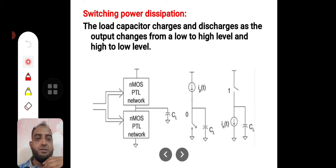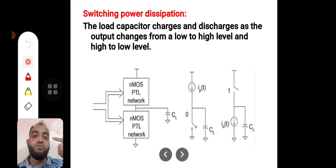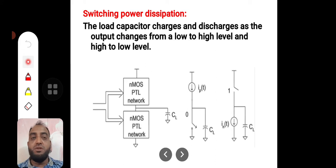Switching involves charging and discharging the load capacitance. Charging the load capacitance makes the logic level of the output one. To make the output one, you have to charge the capacitor; to make the output zero, you have to discharge the capacitor. For that you need to plan your pull-up and pull-down devices accordingly.